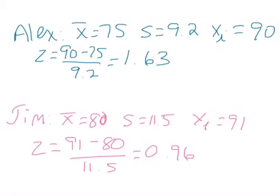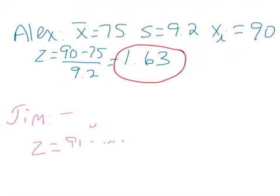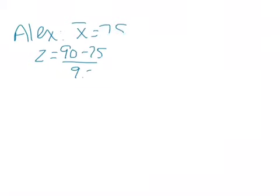What that means is that Alex did better, because his score is 1.63 standard deviations above the mean and Jim's is only 0.96. Notice that if we got a negative answer on either of these, that would mean their score was below the mean. That's a basic example of how you can use z-scores to compare two things.